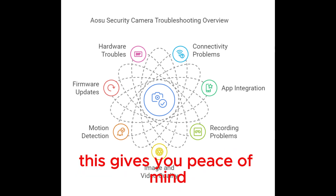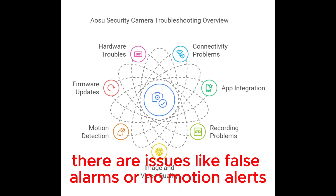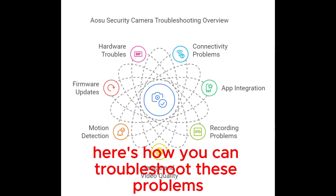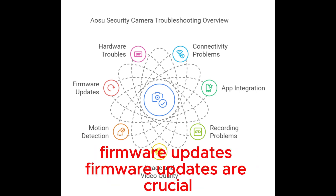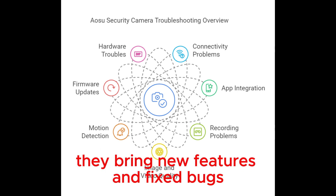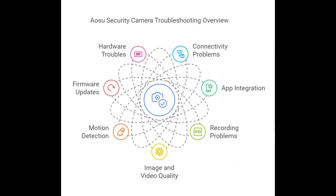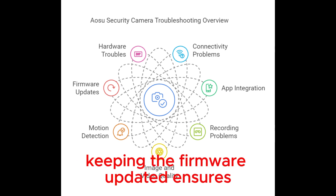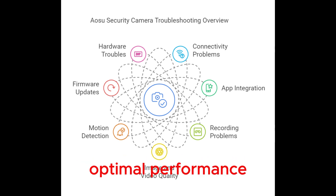Motion Detection: Motion detection is a key feature of the IOSU security camera. It helps you monitor movements in your surroundings, ensuring that every movement is tracked and recorded for peace of mind. However, sometimes there are issues like false alarms or missed motion alerts. Here's how you can troubleshoot these problems.